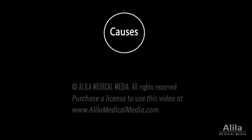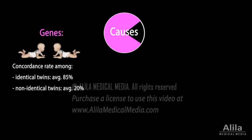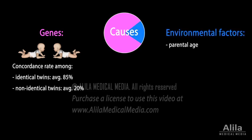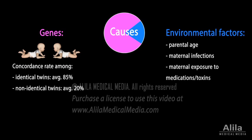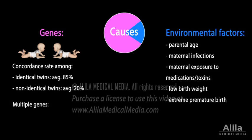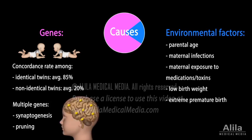Autism has a remarkably high heritability, but there is a role for environmental factors including parental age, maternal infection or exposure to certain medications or toxins before or during pregnancy, low birth weight, and extreme premature birth. Multiple genes have been involved, many of them having a function in synaptic formation or pruning, the process in which connections between brain cells and brain areas are established.